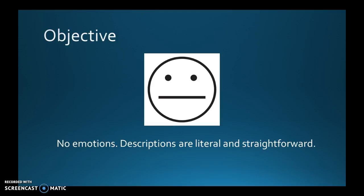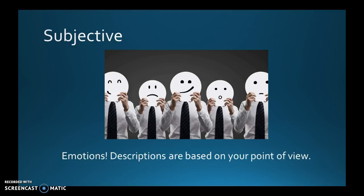Subjective is about emotions or how you're feeling — your opinions depend on your point of view. When you're writing a narrative, you're generally telling it from your point of view, so you're going to have a lot more subjective descriptions than objective.